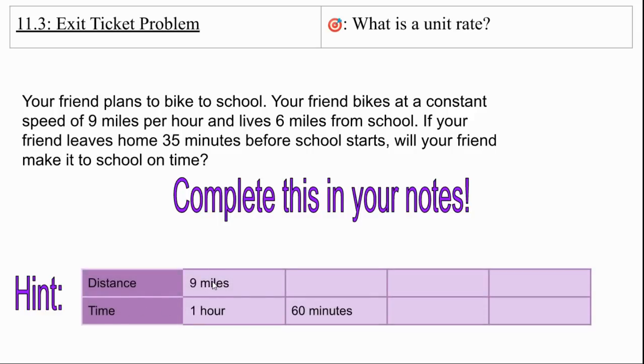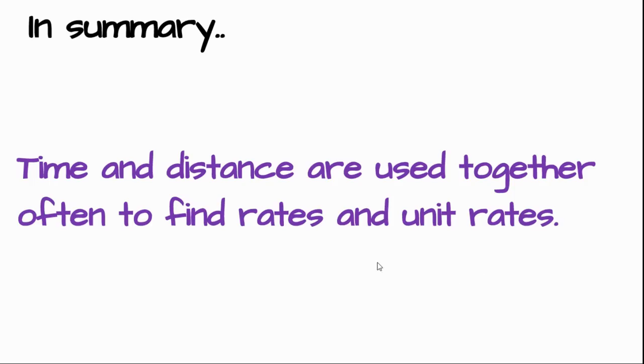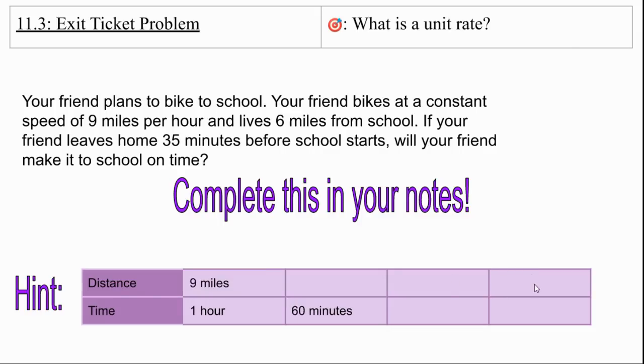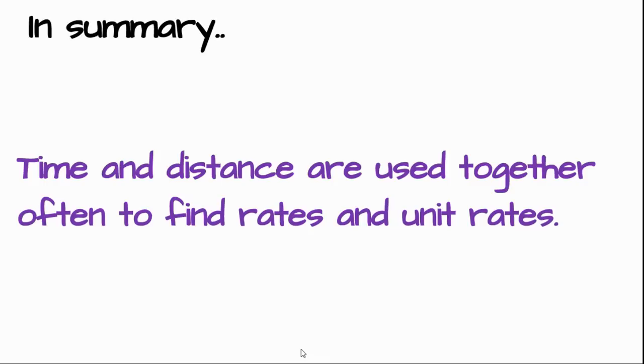So you have to think of a few things. You have 9 miles per hour. They're leaving home 35 minutes. You're going to have to convert it to minutes. 1 hour equals 60 minutes. Then you're going to have to find a nice number that goes into 35. So you're going to have to think through this a little bit. So if it's going to be 9 miles in 60 minutes, maybe use something like 5. And take that number. And then you're going to figure out how do you get to the 6 miles.